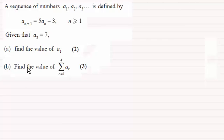But for this one we've got to find the value of the first term a1, and it's quite unusual because we're given the second term. So to do this what we need to do is just set when n equals 1 into our recurrence formula here.